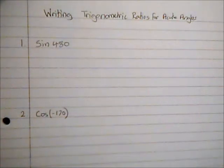In this video we're going to be looking at how we can rewrite trigonometric ratios as ratios of acute angles. So we're going to start off with sine 480 and we're going to try and write this as an acute angle.